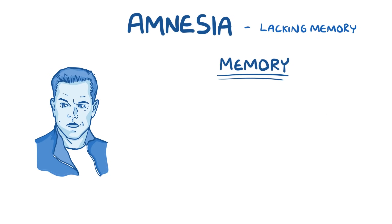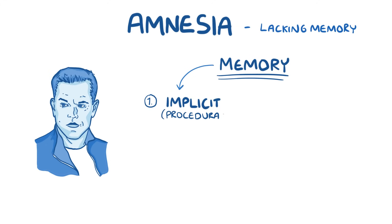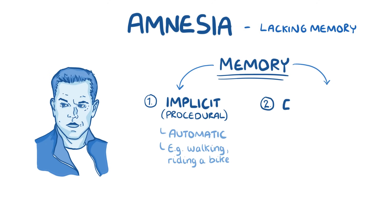Memory can be divided into two main types. The first is implicit memory, also known as procedural memory. Procedural memory refers to the sorts of skills you do automatically without thinking much about it. For example, walking, riding a bike, or texting for most teenagers — anything that has become a habit. The second type of memory is explicit memory, also known as declarative memory.